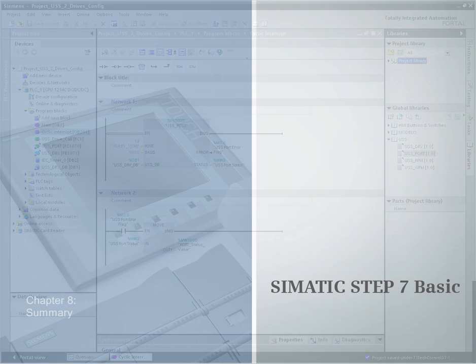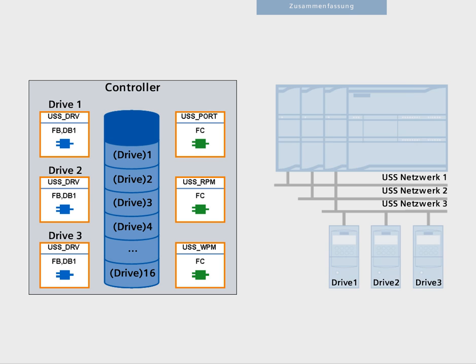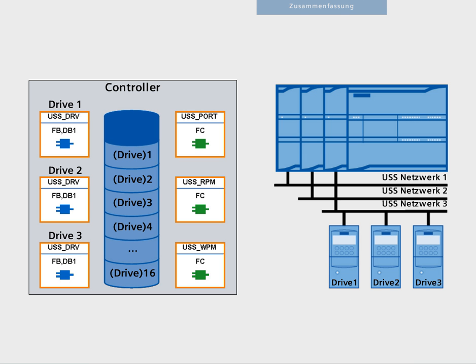Chapter 8 – Summary. With the global USS library integrated in Step 7 Basic, it is very easy to program a drive using the universal serial USS interface protocol. If you are using three communication modules in the S7-1200, up to 48 drives can be operated.